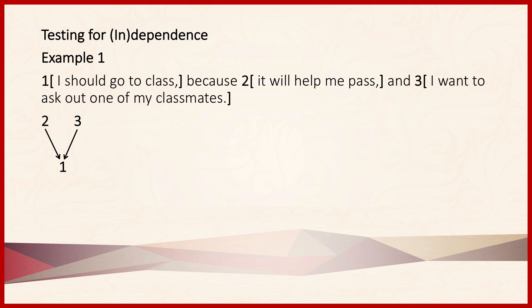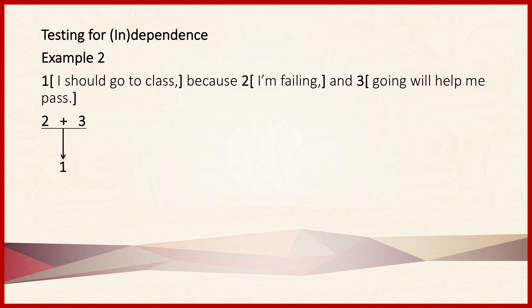That's why we have separate arrows drawn from 2 and 3 to the conclusion. Contrast that with this example: 1, I should go to class, because 2, I'm failing, and 3, going will help me pass. Proposition 3 leading to proposition 1 presupposes that I'm failing the class. If 2 were removed from the equation, then the strength of the inference from 3 to 1 would really be weakened. That's how it is that propositions 2 and 3 work together to support 1, and so it should be represented that way.